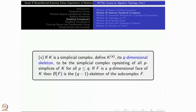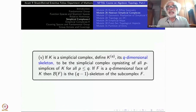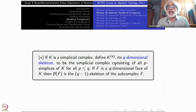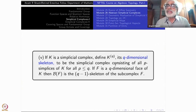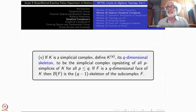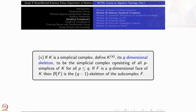If you have any Simplicial Complex K, the 0-dimensional skeleton will be just a set of vertices. The one-dimensional skeleton could also be just a set of vertices if there are no edges. That means the original Simplicial Complex itself is just a set of vertices. You have to understand this notation carefully.